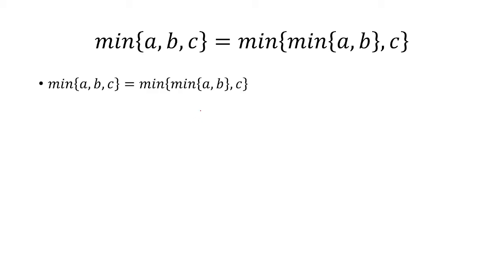The second case will be if the minimum of a, b, and c is b. So now when we're looking at the minimum of a and b, clearly b is smaller than a and c.